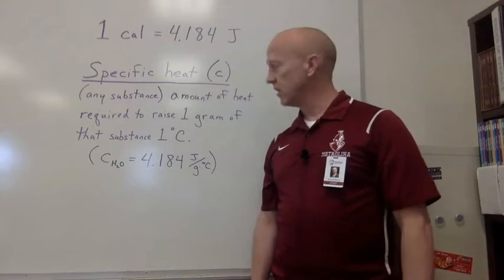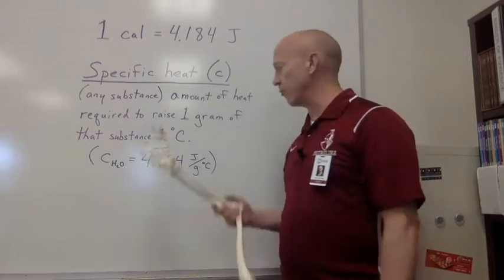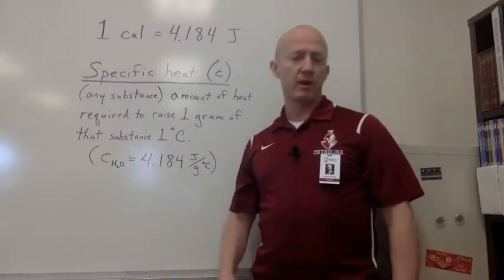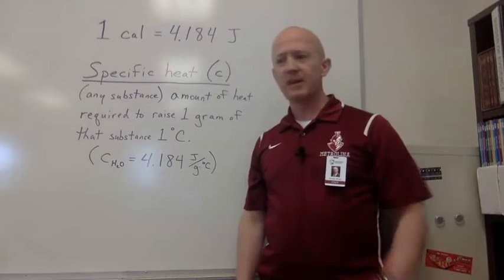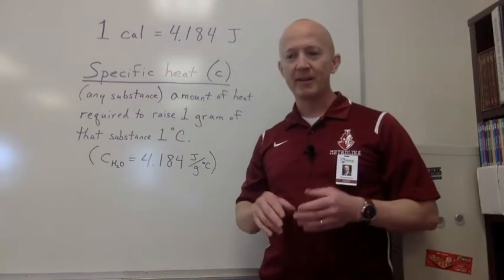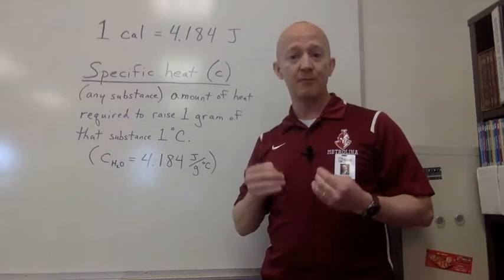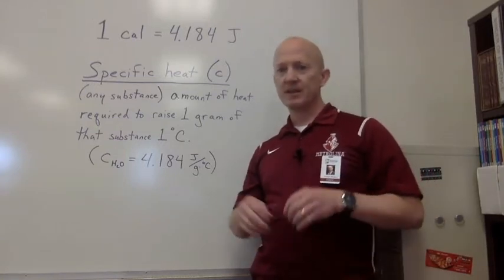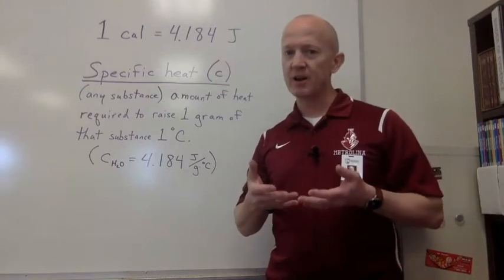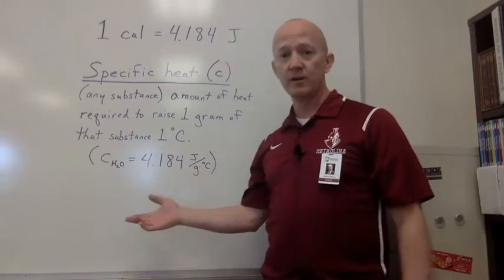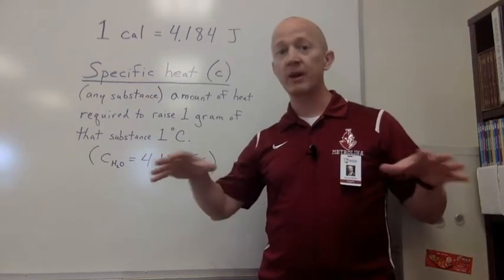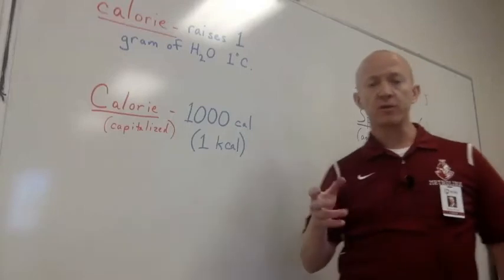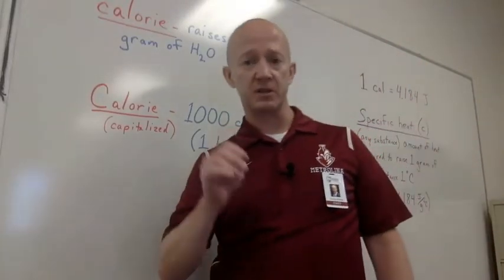As far as specific heats go, water has a pretty good one, 4.184 is pretty reasonable for specific heat. Now on the other hand, concrete has a very low specific heat, 0.84 joules per gram degree Celsius. In other words, it takes very little to increase the temperature of concrete compared to water. That's why water's such a great temperature regulator because of its specific heat. The important thing to remember is that every substance has its own specific heat.